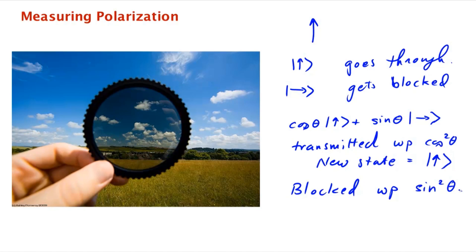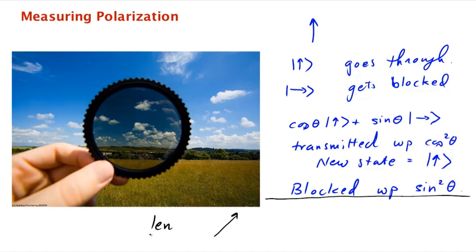You can also change the orientation of the lens. For example, if you rotate the lens so it's oriented at 45 degrees, that corresponds to a measurement in the diagonal basis. Photons polarized diagonally are transmitted, and photons in the orthogonal diagonal orientation get blocked.